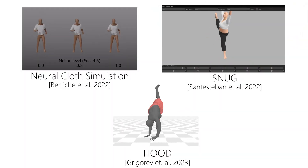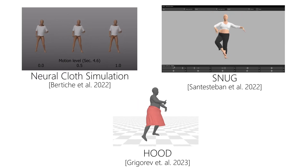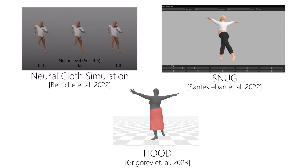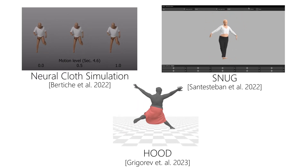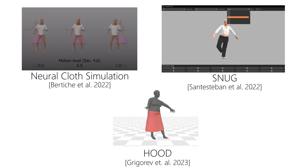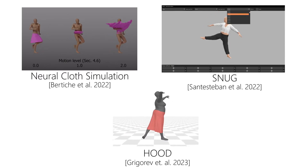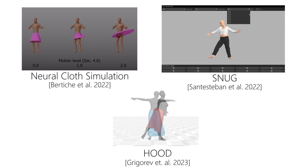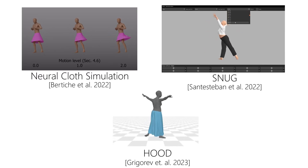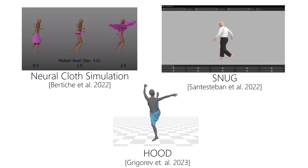There is significant recent interest in using neural networks to learn garment simulation. While there has been progress on such methods, little attention has been directed to handling cloth self-intersections with them.